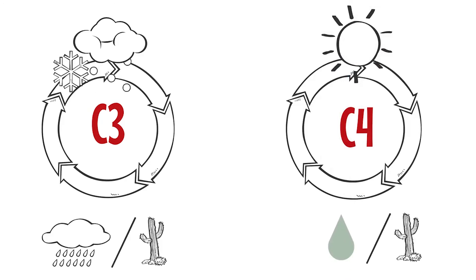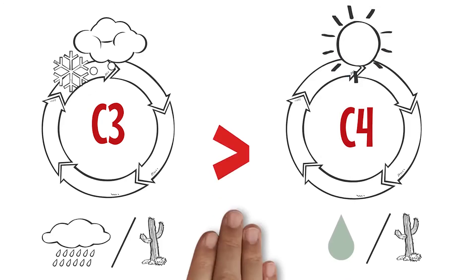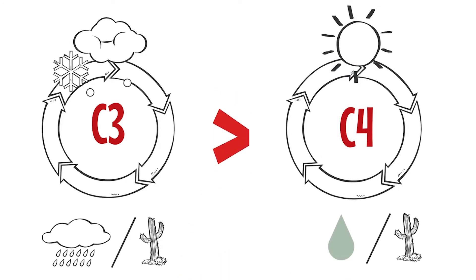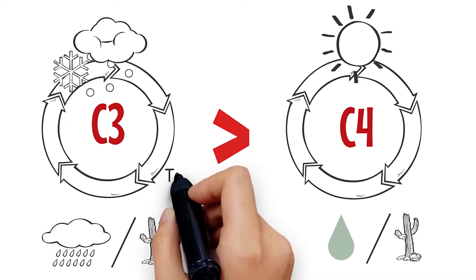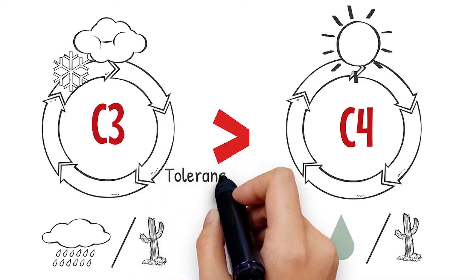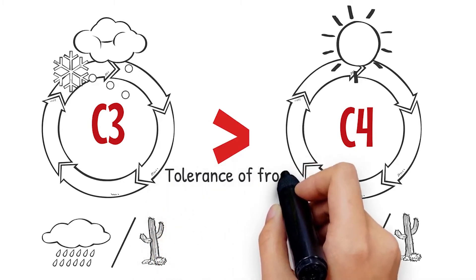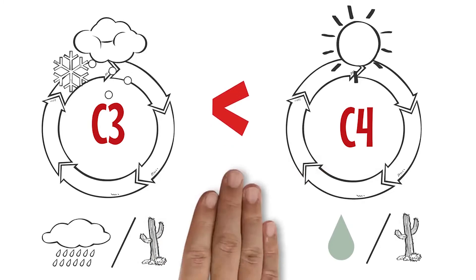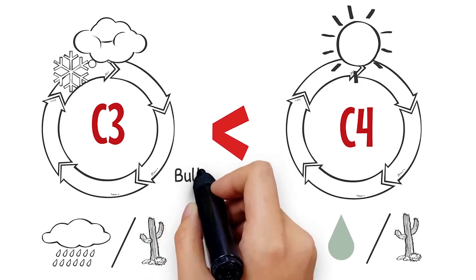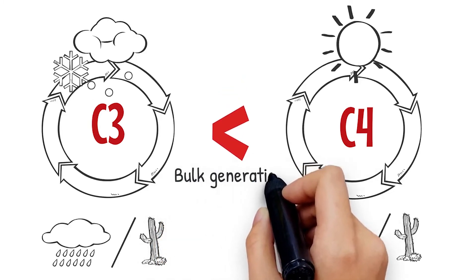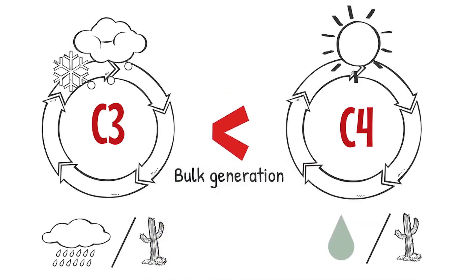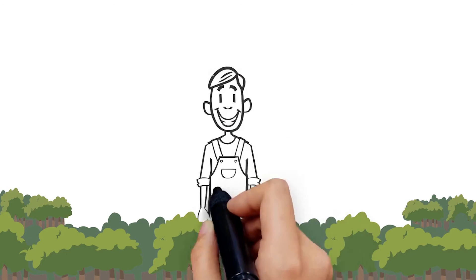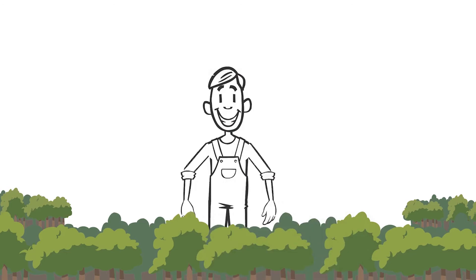A feature of C3 grasses is their greater tolerance to frost compared to C4 grasses. C3 species of grass also tend to generate less bulk than C4 grass species.